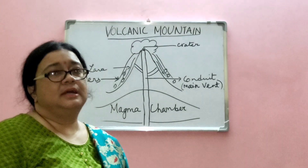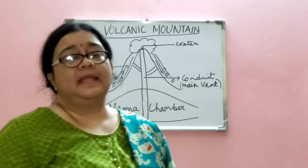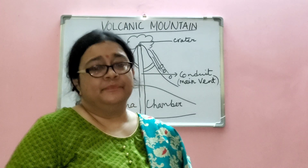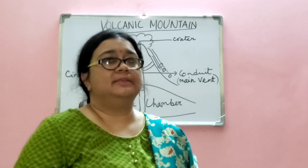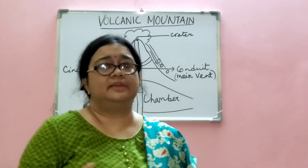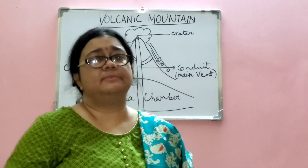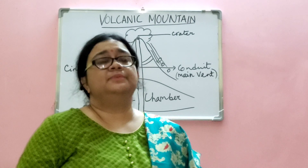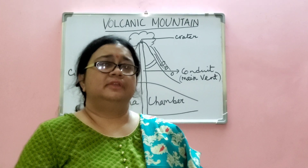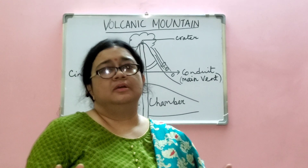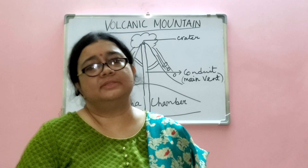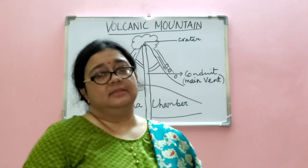Volcanic mountains are categorized into three types. Active volcanoes are those which erupt frequently — for example, Mount Etna in Sicily. Extinct volcanoes have not erupted for several centuries and will never erupt — for example, Mount Kilimanjaro in Tanzania, Africa. Dormant volcanoes erupted long ago but currently do not erupt; however, they show signs of the possibility of eruption in the future.